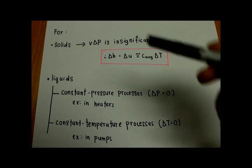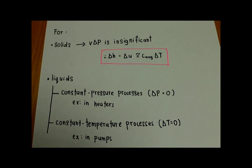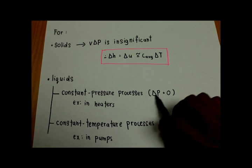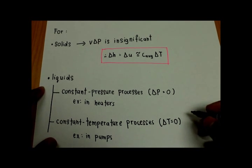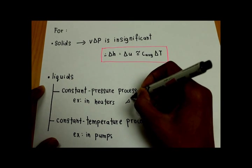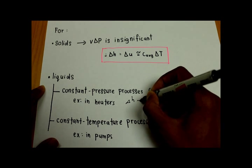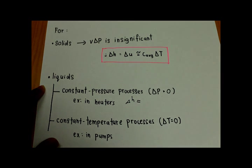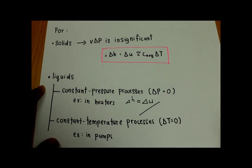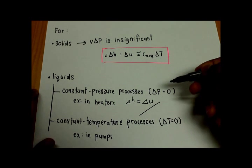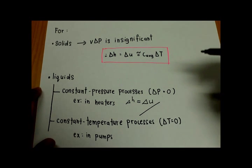The second part is for liquids. For liquids, we have two special cases. The first special case is for a constant pressure process. In this process, the change of pressure is zero. Hence, the equation for the constant pressure process is delta h equal to delta u. From this equation, we know that the change of enthalpy is equal to the change of internal energy.